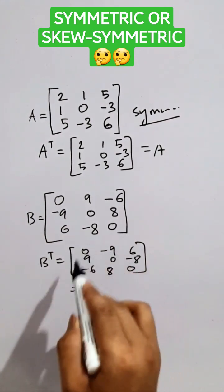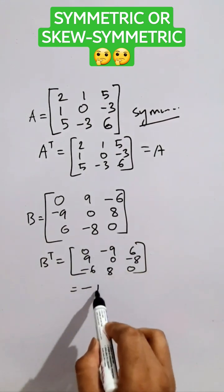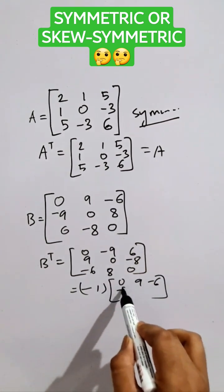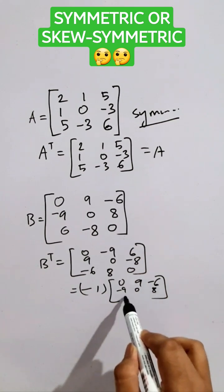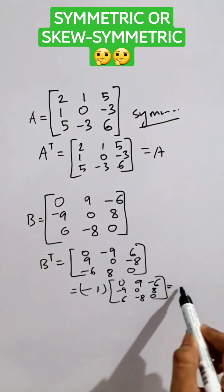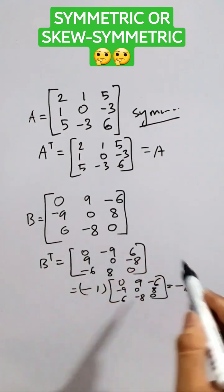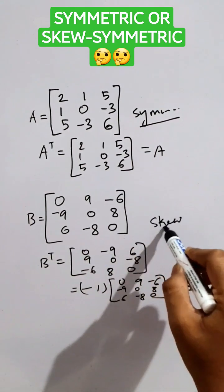If we take minus common from all of the terms, then it will be 0, 9, minus 6, minus 9, 0, 8, 6, minus 8, 0. So it is minus B. This is skew-symmetric.